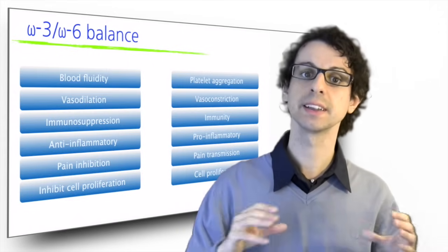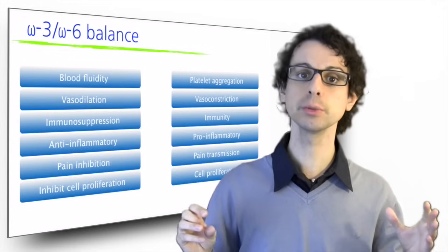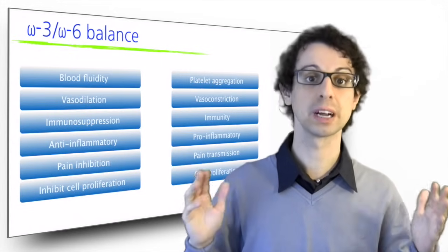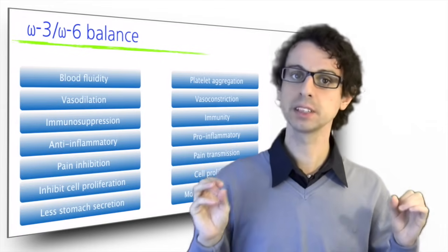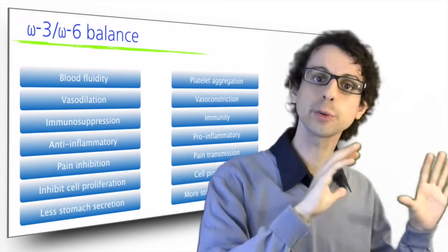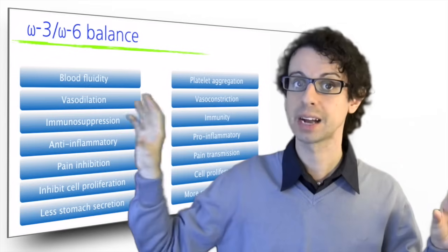But if cell proliferation isn't checked, the risk for tumor development and growth would be much higher. I think you got the idea. Now, these opposite actions are often performed by omega-6 derived eicosanoids and omega-3 derived ones.